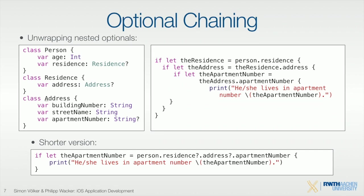You will see optionals a lot — every time you use functions with network connections, every time you use UI elements that may or may not exist, many functions return optionals. Whenever you're uncertain about the state of an object, you should use the optional property to distinguish whether the object exists or not.